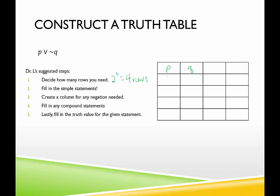To fill in a two-simple-statement truth table, I use true, true, false, false for p, and then alternate true, false, true, false for q. This gives the four different combinations. If you did true, true, false, false for both, two of the rows would be the same — that's not correct. Make sure all four rows are unique combinations.